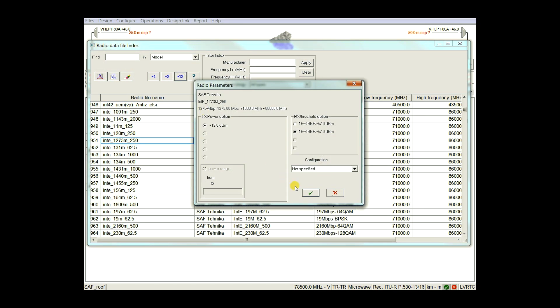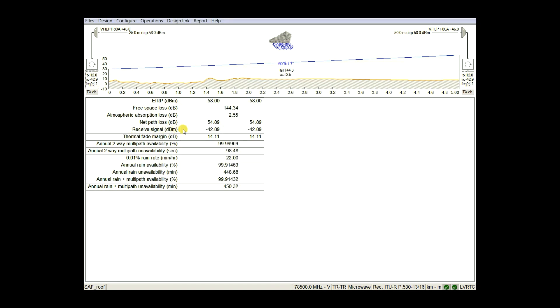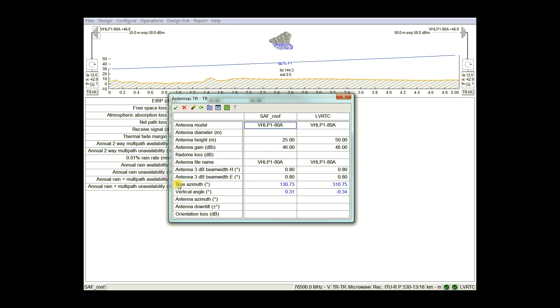Before starting the alignment, you should already know what signal level to expect. Any path calculator software can be used for this purpose. It also enables you to obtain the azimuth and elevation angles.